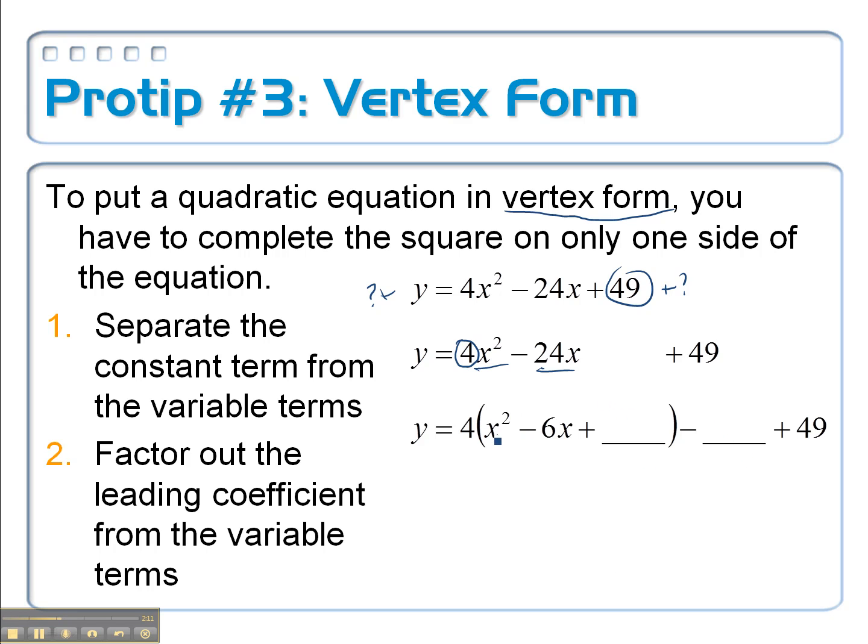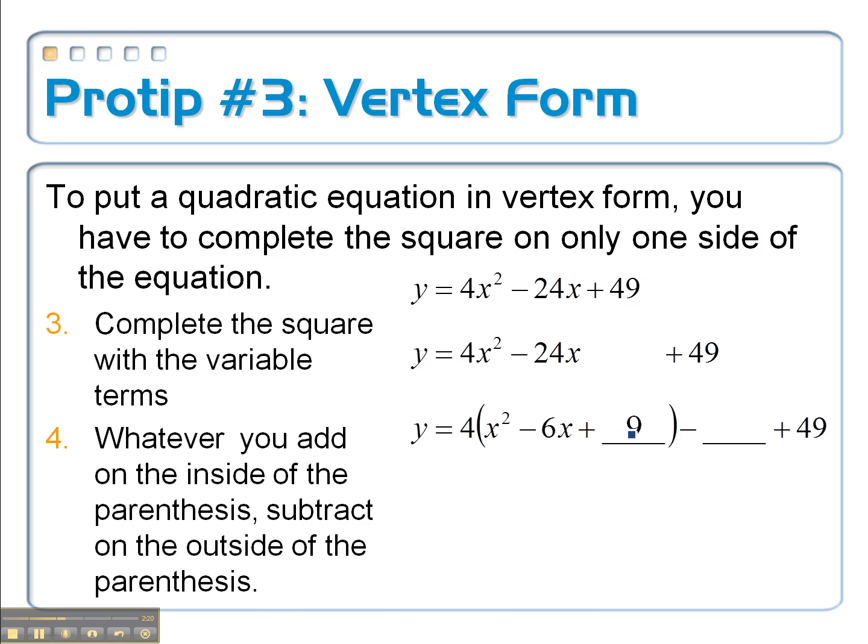Okay, so when I complete the square here, I take half of negative 6, which is negative 3, square it, and I got 9. So we're going to complete the square with 9. But really I didn't add 9. Remember there's this 4 that's on the outside of the parentheses. You have to take that into account whenever you go to subtract the number on the outside. So really it's as if we added 36. So then I'm going to have to subtract 36 on the outside of the parentheses.